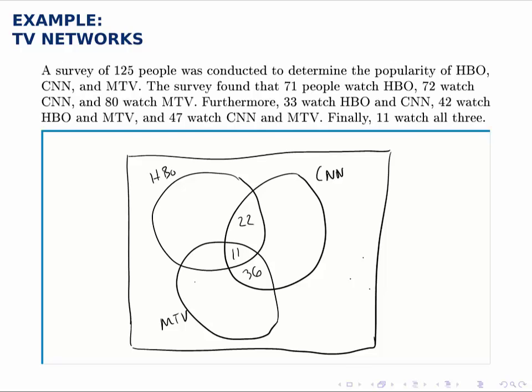Finally, we look for HBO and MTV, and we notice there's 42 in that intersection. So we can double check these numbers as we go to make sure that that intersection has 42 for instance.